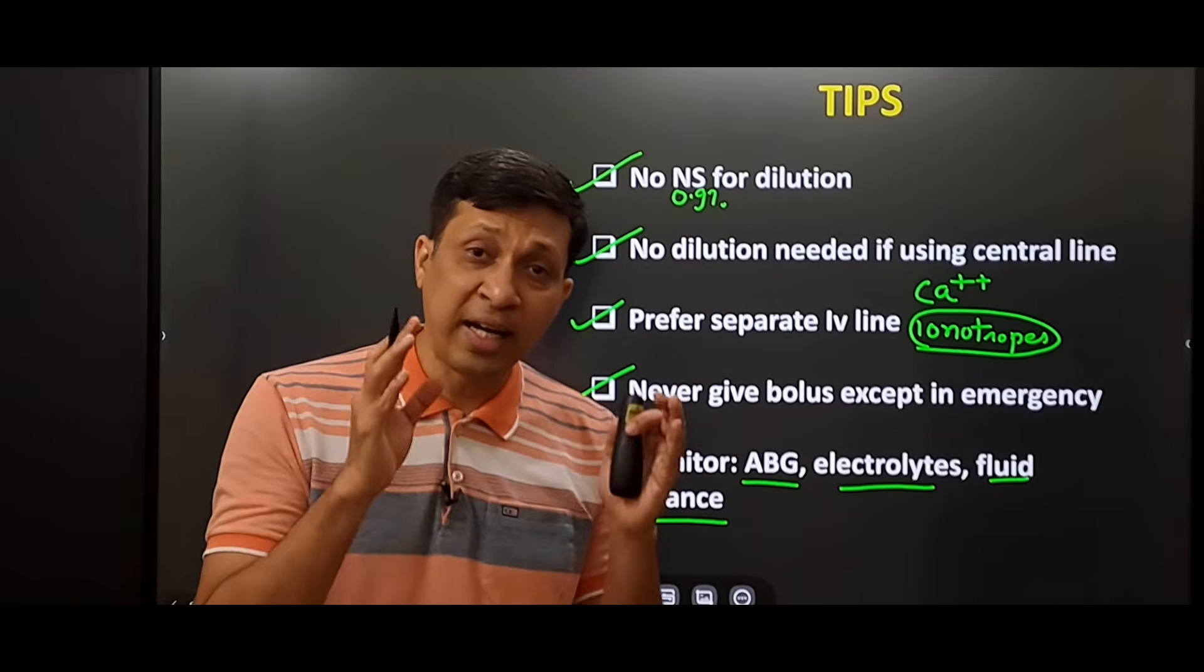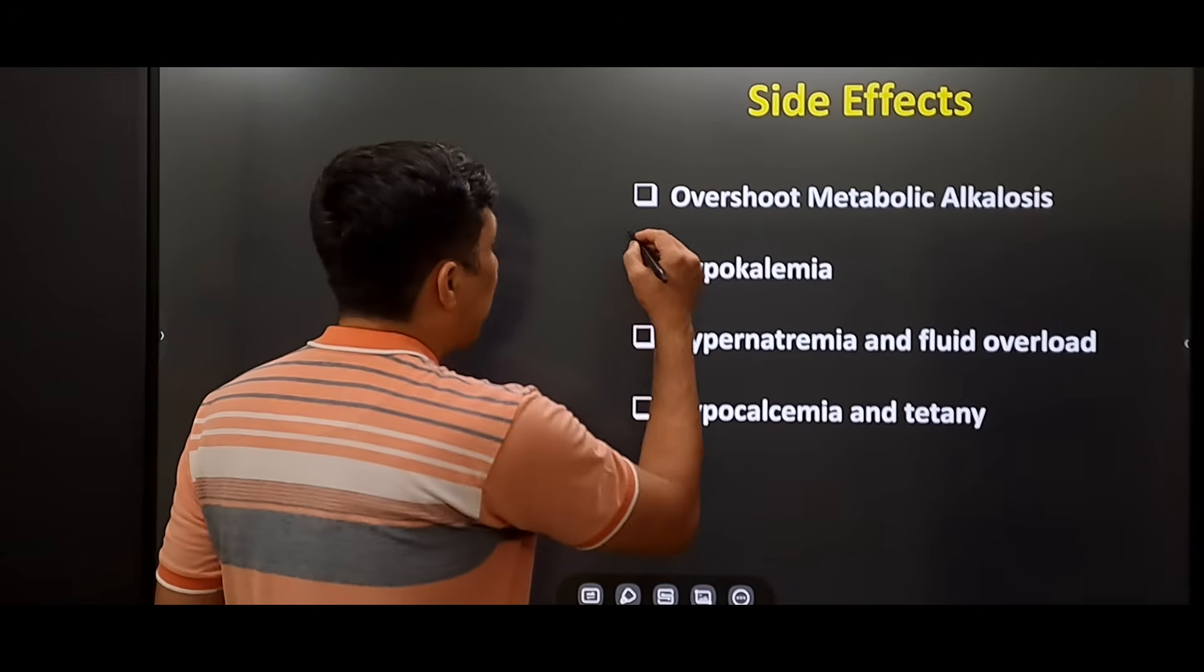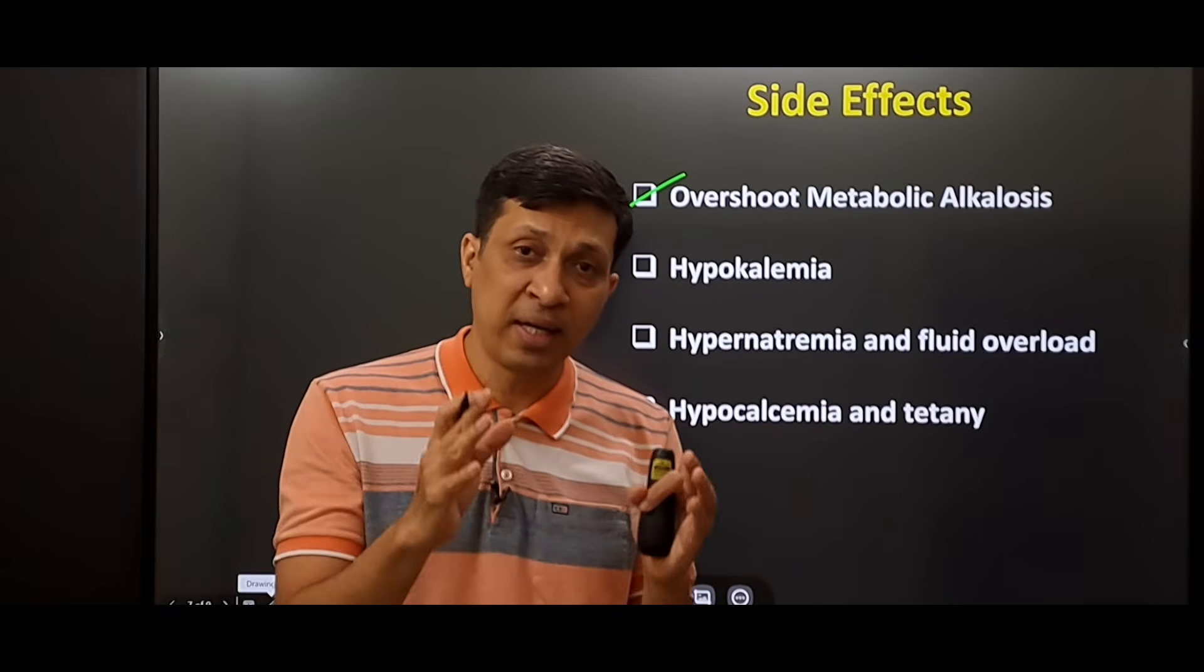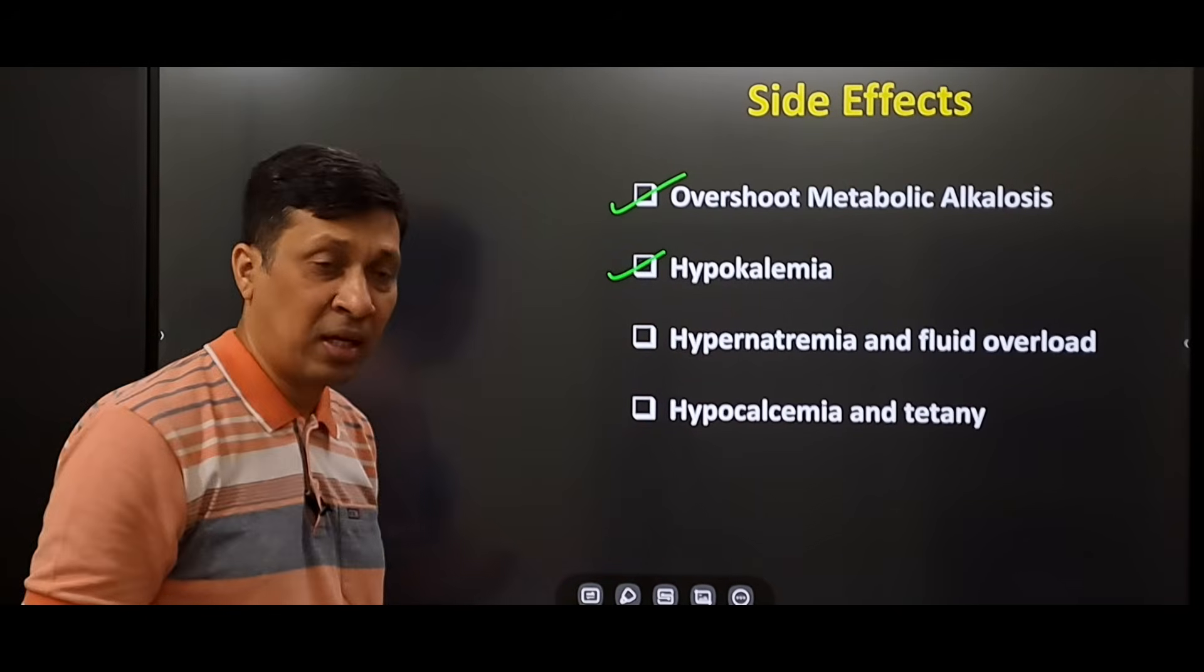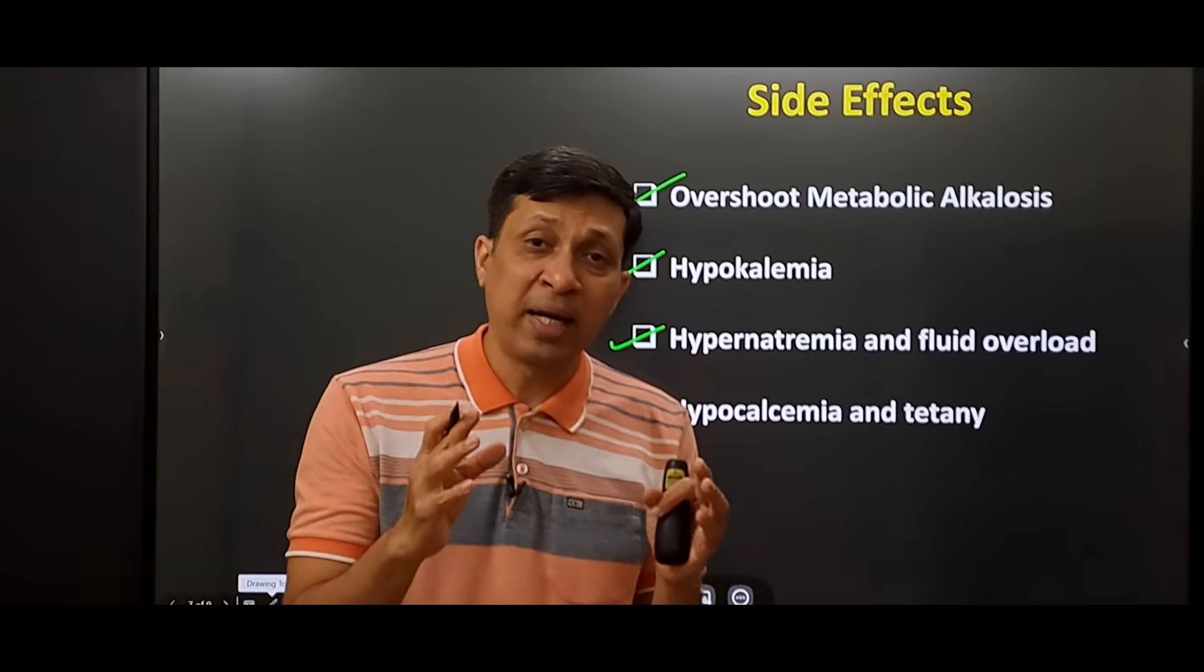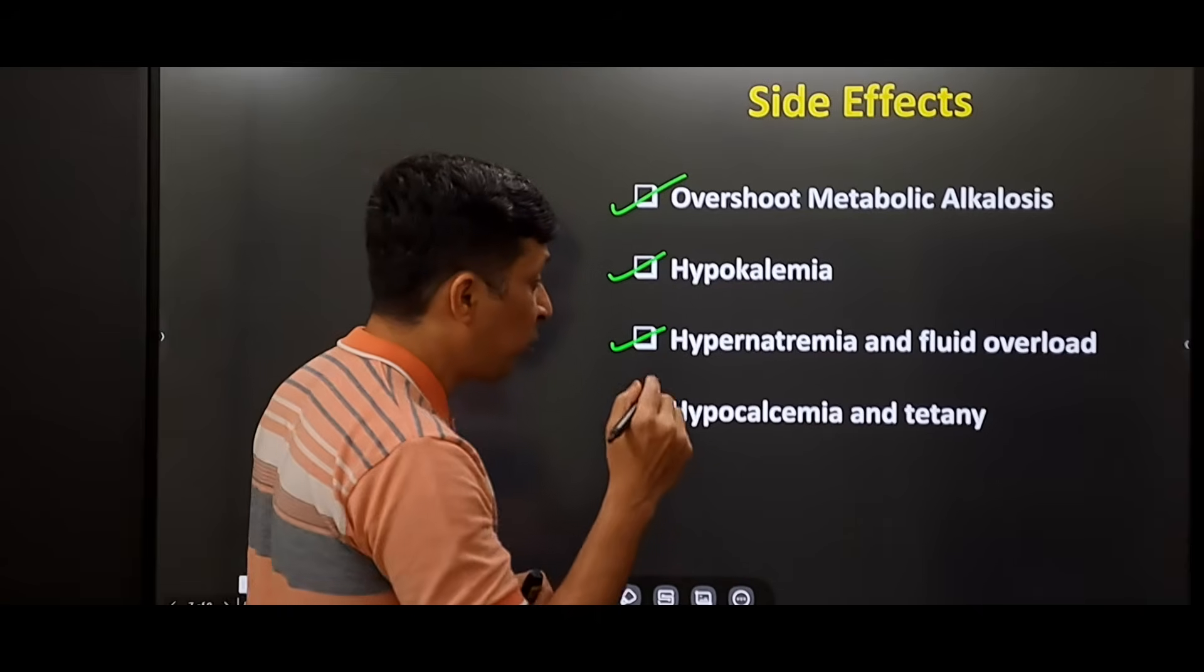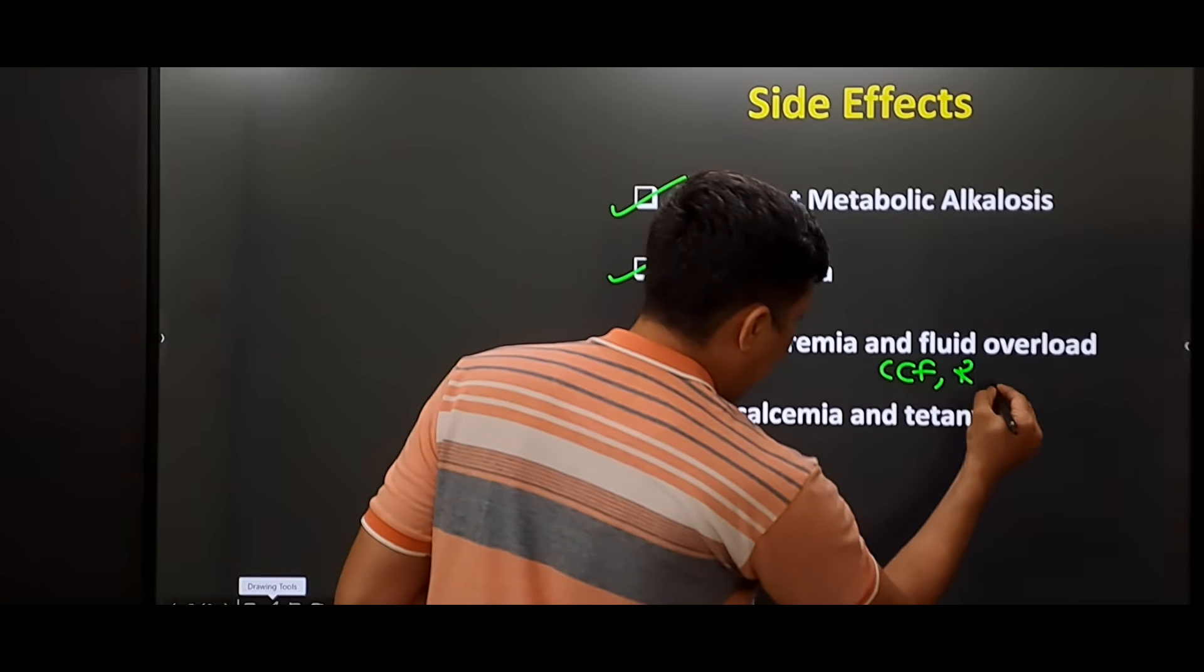Now, what are the side effects that can be possible while giving this drug to a patient? First, there can be overshoot metabolic alkalosis. This is the reason why we aim for lower levels of bicarbonate, 18 to 20. There can be hypokalemia. There can also be hypernatremia and fluid overload. Keep in mind that there are a lot of sodium ions in this drug, and it can lead to fluid overload. You have to be particularly cautious in patients of congestive cardiac failure and renal failure.